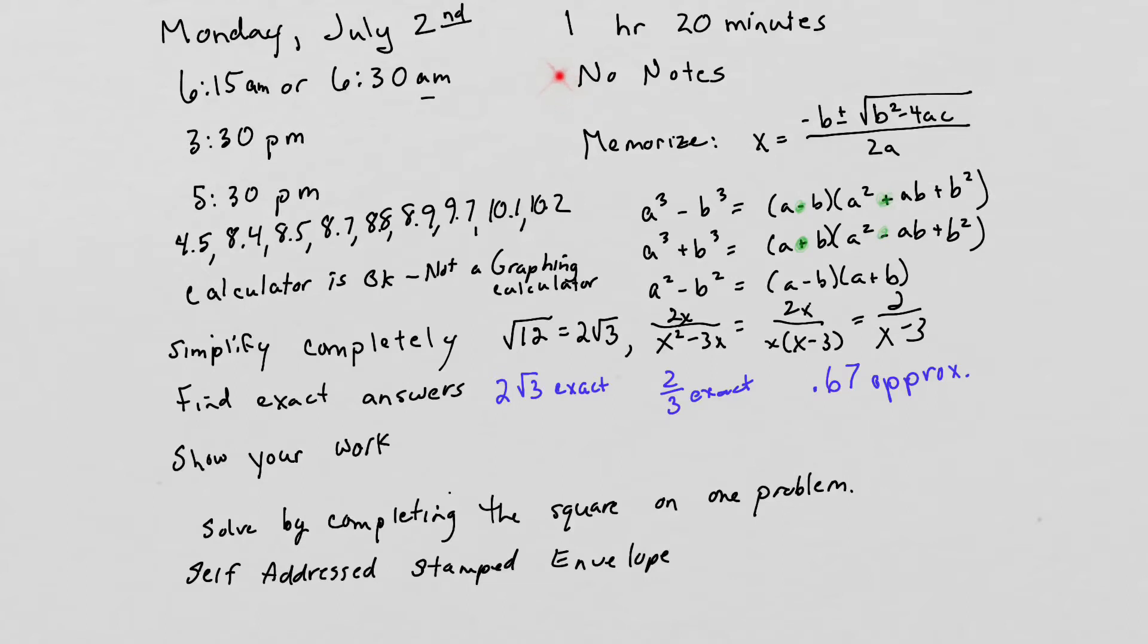Some reminders: memorize the quadratic formula, the difference of two cubes formula, the sum of two cubes formula, and the difference of squares formula. The sum and difference of cubes formulas only differ by a minus sign. So a³ - b³ has its minus sign here but a plus sign here, whereas a³ + b³ has a positive sign first and then the minus sign is in this position. Each formula only has one minus sign.